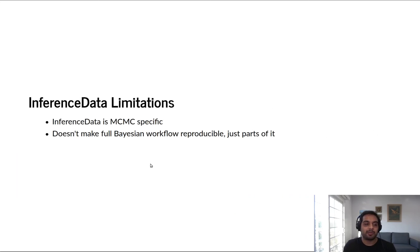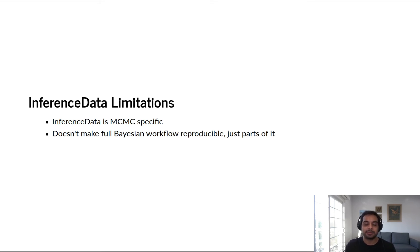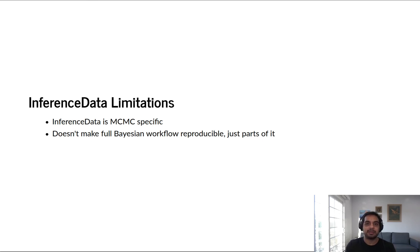There are some limitations. All of this is very MCMC-specific. Inference data is not well suited right now to variational inference or other posterior estimating methods, but we're really hoping to expand to capture the full Bayesian community and not just the MCMC community. It also doesn't fix the reproducibility problem in its entirety — the sampling itself has already been performed and it doesn't help you reproduce the sampling steps, but we do hope it helps provide reproducibility and ease of use in most of the workflow steps.